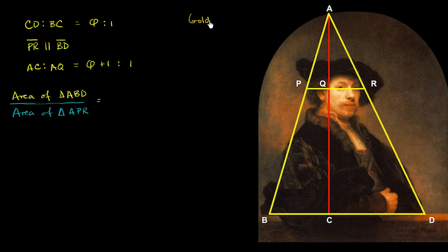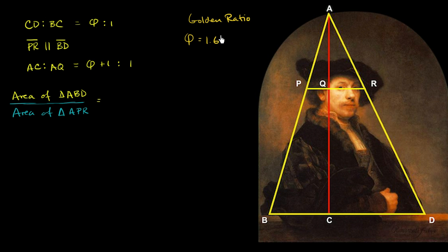I've done whole videos about it. It's this fascinating number that's usually denoted by the Greek letter phi. If you were to expand it out, it's an irrational number: 1.61803, and it just goes on and on forever. But there are some very neat mathematical properties of phi, or the golden ratio.